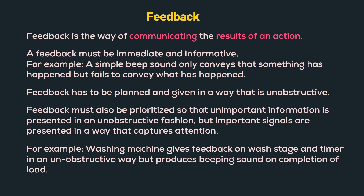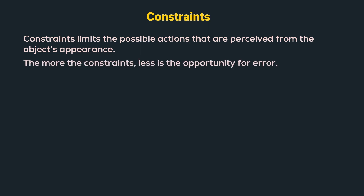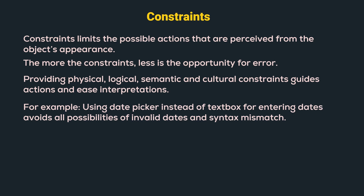Now let us understand the next principle, which is constraints. Constraints limit the possible actions perceived from an object's appearance. The more the constraints, the less the opportunity for error. Providing physical, logical, semantic, and cultural constraints guides action and eases interpretation. For example, using a date picker instead of a text box for entering dates avoids all possibilities of invalid dates and syntax mismatch.